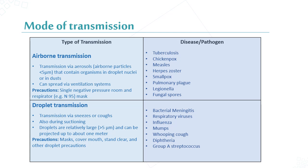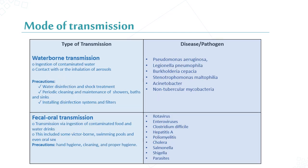For droplet transmission — transmission via sneezing or coughing, also during suctioning — droplets are relatively large, greater than 5 microns, and can be projected up to about 1 meter. The precautions include wearing a surgical mask, covering the mouth, and standing clear, plus other droplet precautions. Examples include influenza and bacterial meningitis.